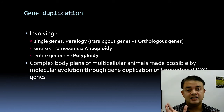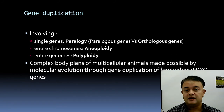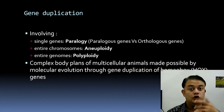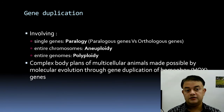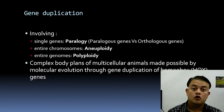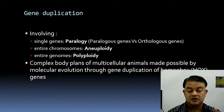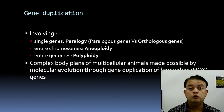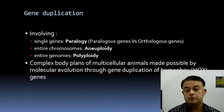Gene duplication can involve single genes — known as paralogy. Paralogous genes result from gene duplication events; for example, hemoglobin and myoglobin are paralogous genes. Orthologous genes, by contrast, are homologous genes separated by speciation events. Entire chromosomes can also duplicate (aneuploidy), which is common in eukaryotes — for example, trisomy 21 (Down syndrome), trisomy 18, and trisomy 13 in humans.